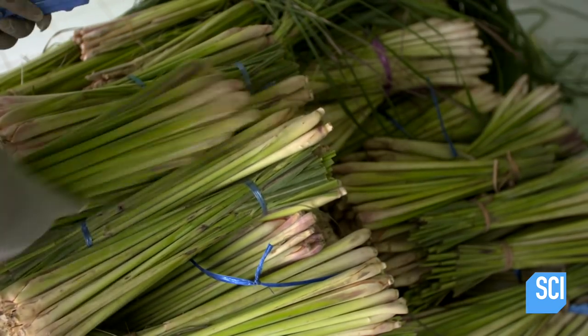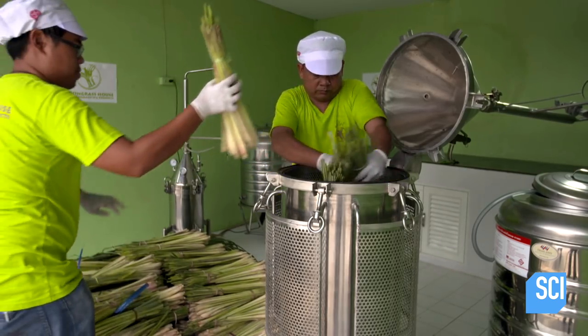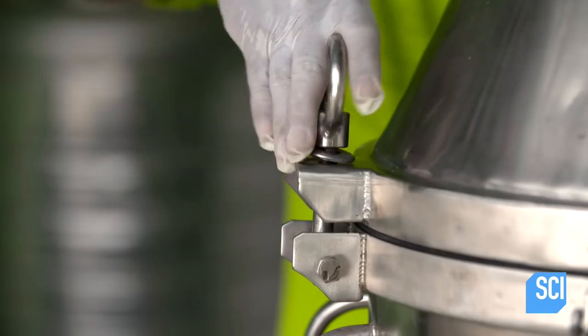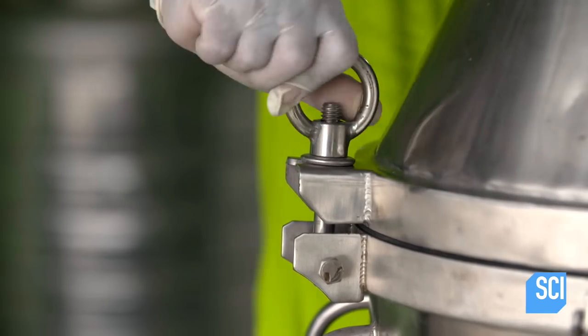They stack the bundles in a crisscross fashion, creating gaps for steam to pass through. They screw the lid tightly to prevent the loss of steam during distillation.